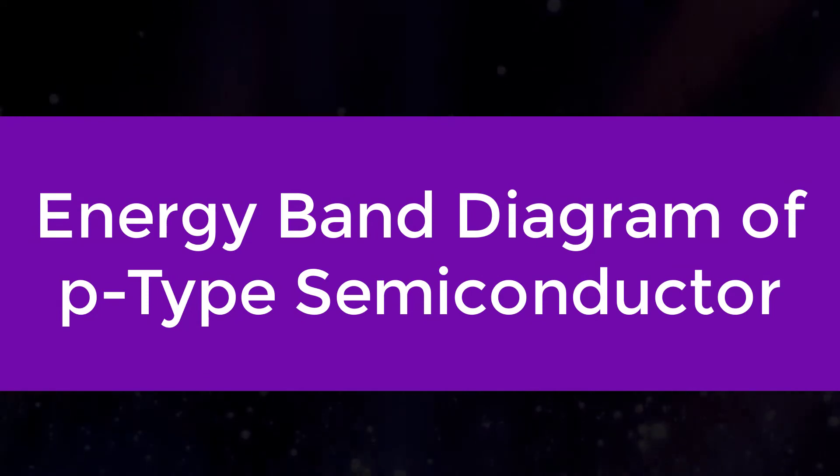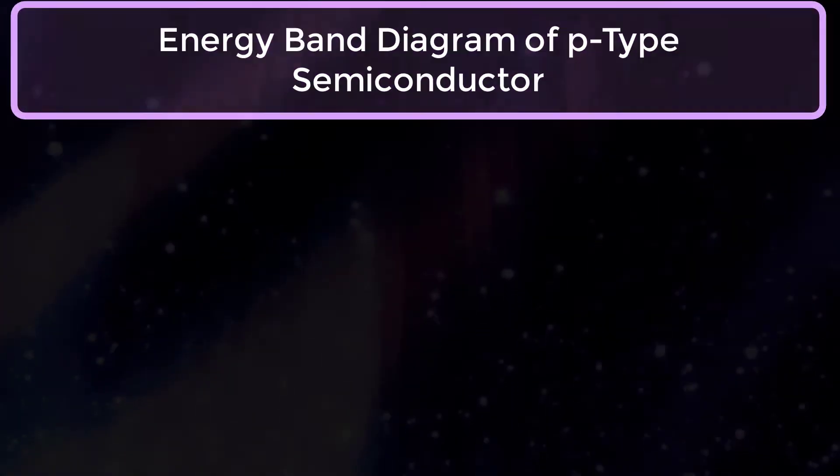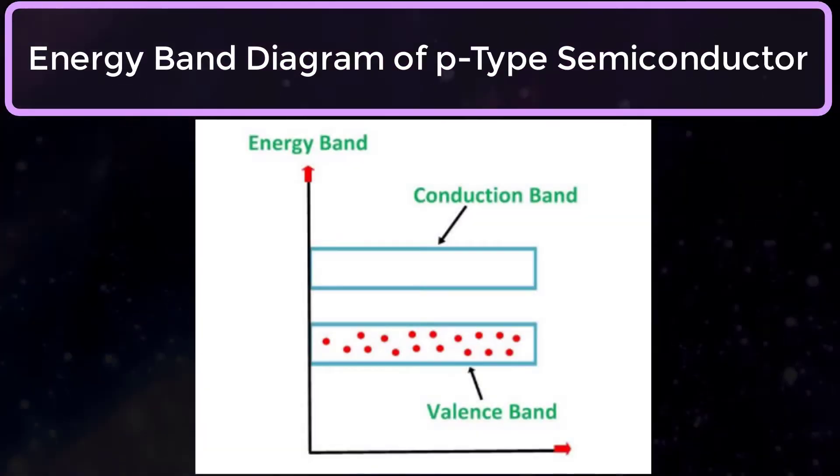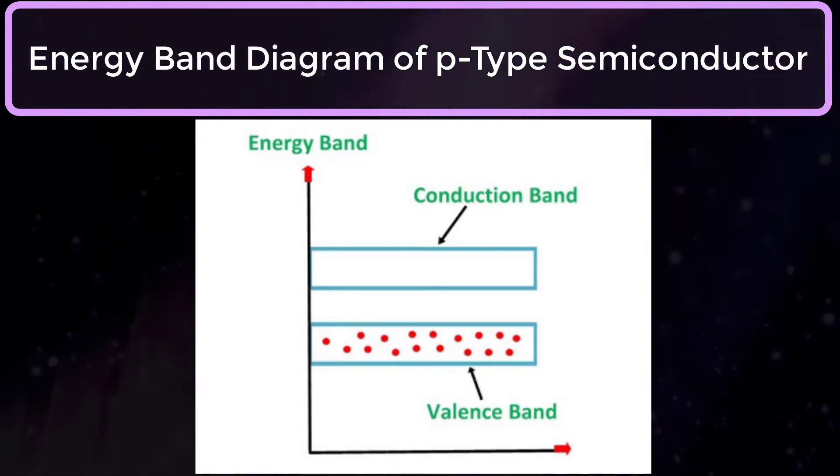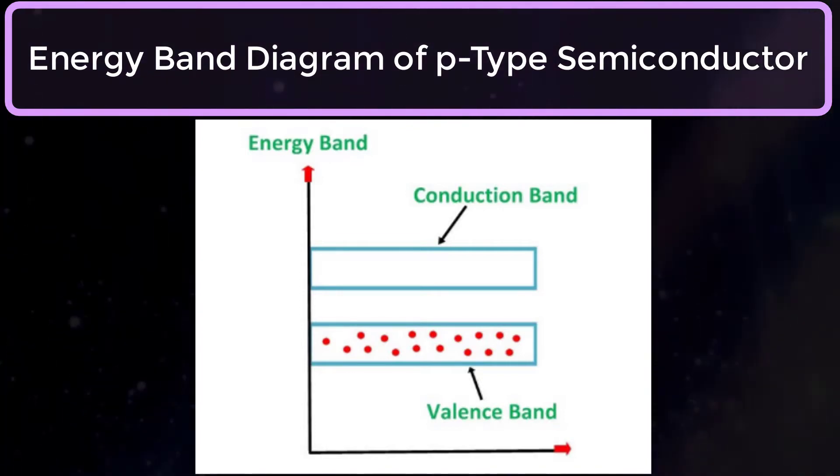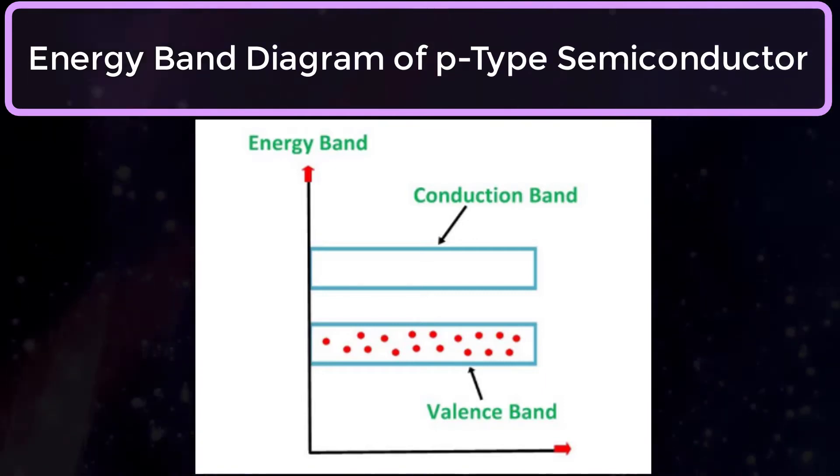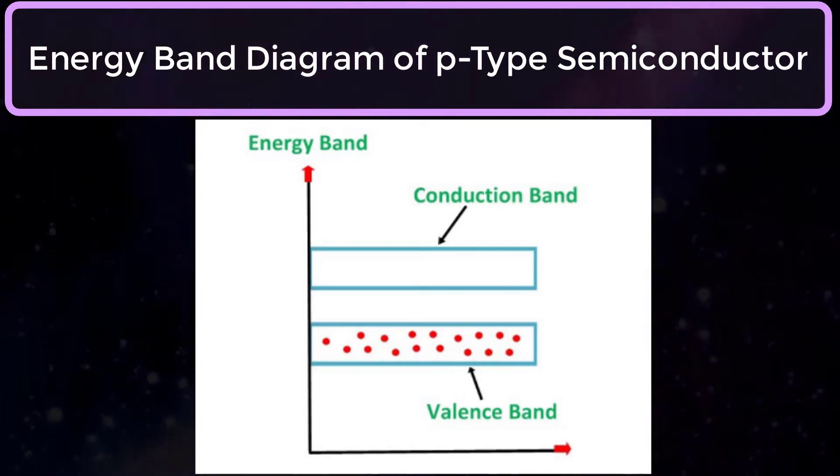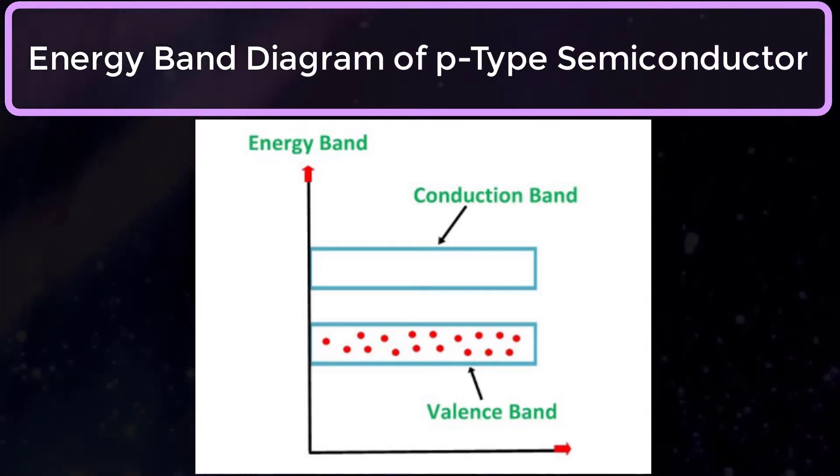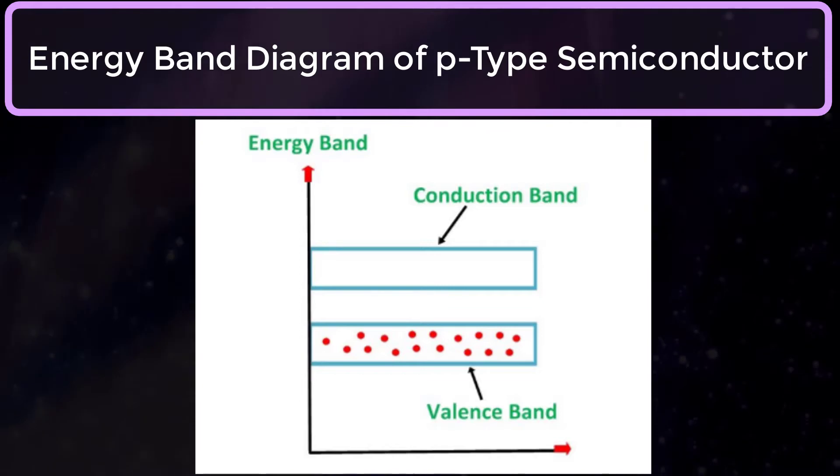Energy band diagram of P-Type Semiconductor: A large number of holes or vacant space in the covalent bond is created in the crystal with the addition of the trivalent impurity. A small or minute quantity of free electrons is also added in the conduction band.